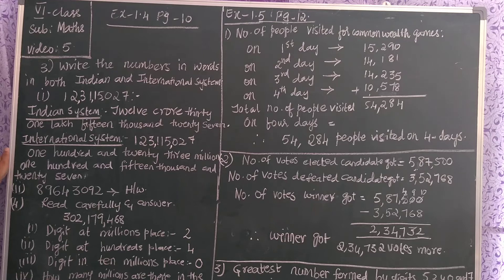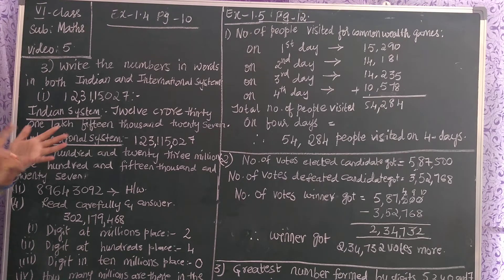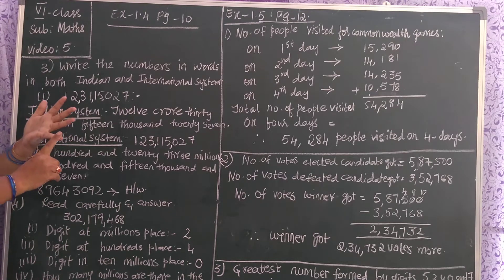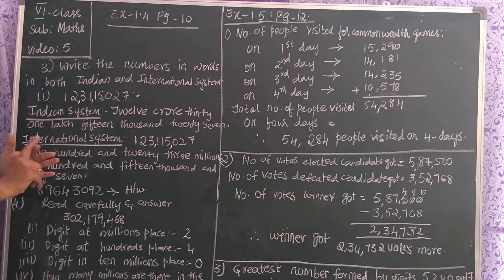In international system also we learnt the place values. Those are ones, tens, hundreds, thousands, ten thousands, hundred thousands, millions, ten millions, hundred millions.